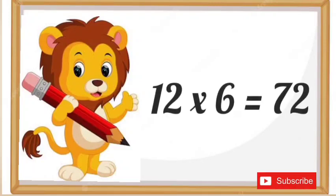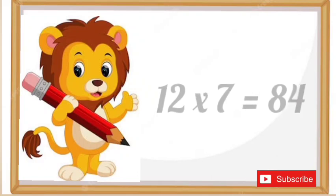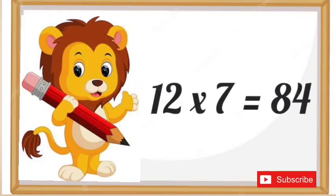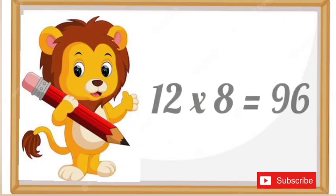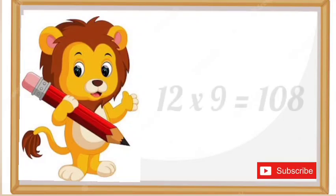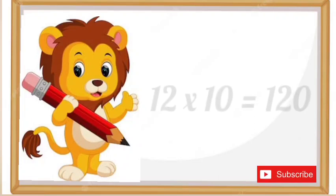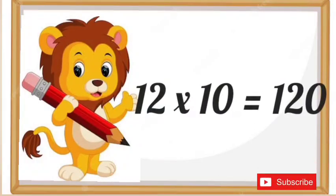12 sixes are 72. 12 sevens are 84. 12 eights are 96. 12 nines are 108. 12 tens are 120.